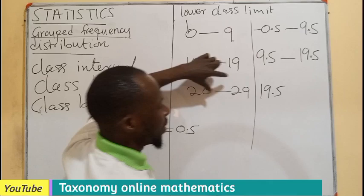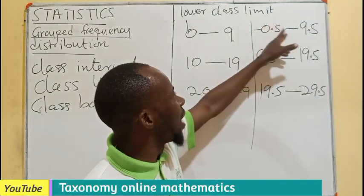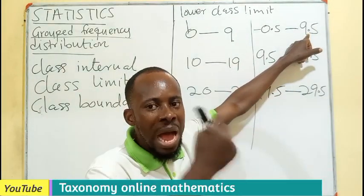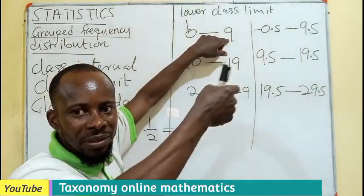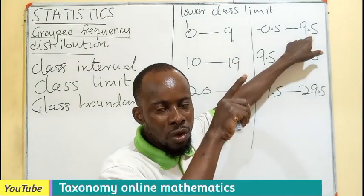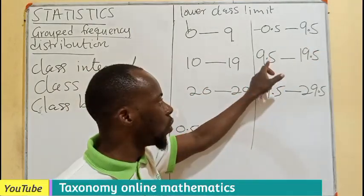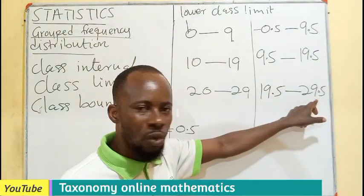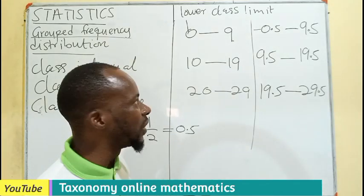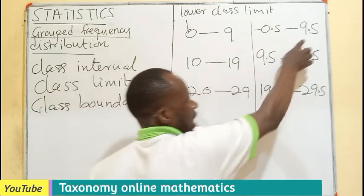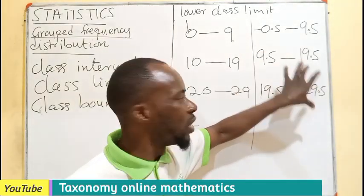Subtracting 0.5 from 20 gives 19.5, and adding 0.5 to 29 gives 29.5. If you check carefully, the upper class boundary of one class and the lower class boundary of the next class are the same, making it a continuous range. The pattern continues: 29.5, 39.5, 49.5, and so on — unlike class limits which have a gap of 1 between them.